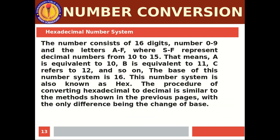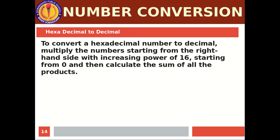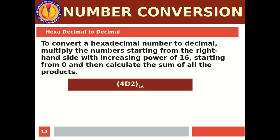Now for hexadecimal number system: it consists of 16 digits — numbers 0 to 9 and letters A to F, where A to F represent decimal numbers 10 to 15. The base of this system is 16, also known as hex. To convert hexadecimal to decimal, multiply the digits from the right hand side with increasing powers of 16 starting from 0, then calculate the sum of all the products. Let's try 4D2.